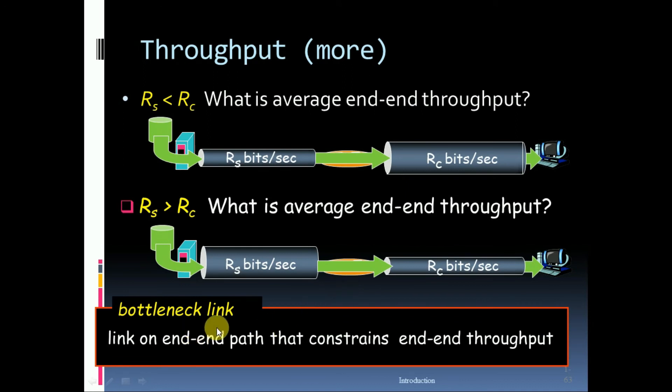So bottleneck link. Link on end-to-end path that constrains end-to-end throughput.